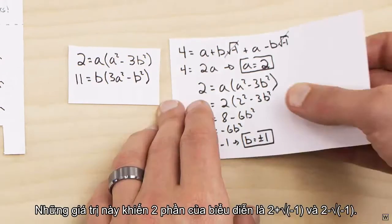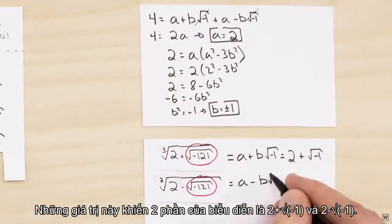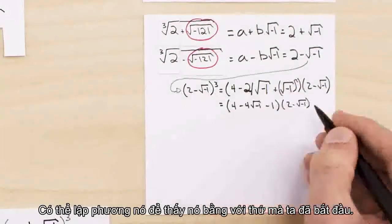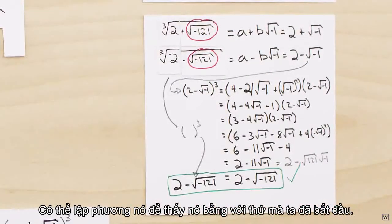These values make the two parts of our expression equal to two plus the square root of minus one and two minus the square root of minus one. We can cube these and show that they are in fact equivalent to what we started with.